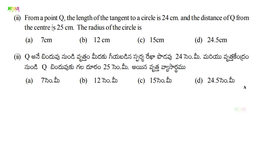Second question: From a point Q, the length of the tangent to a circle is 24 centimeters, and the distance of Q from the center is 25 centimeters. Find the radius of the circle. We have an external point Q, the distance from Q to the center is 25 centimeters, and the tangent length is 24 centimeters.